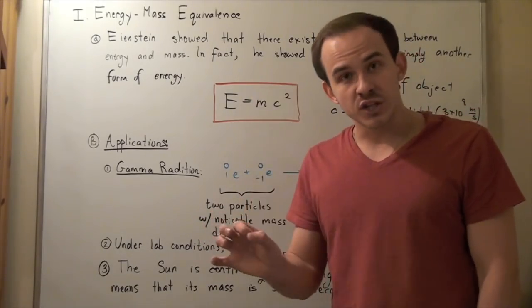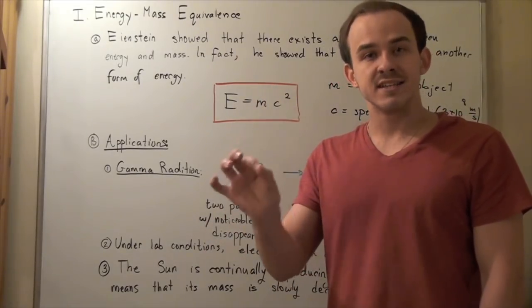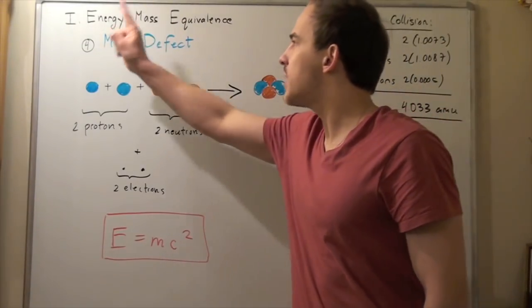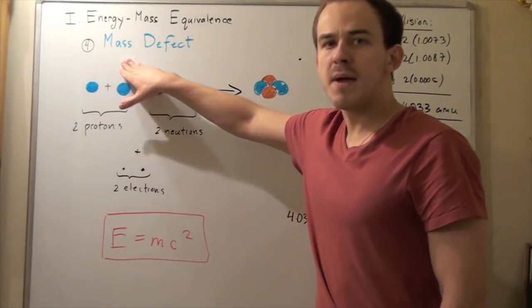That means, eventually, the sun's mass will, in fact, disappear. Let's examine the final type of example that deals with energy-mass equivalence. Let's look at something called the mass defect.